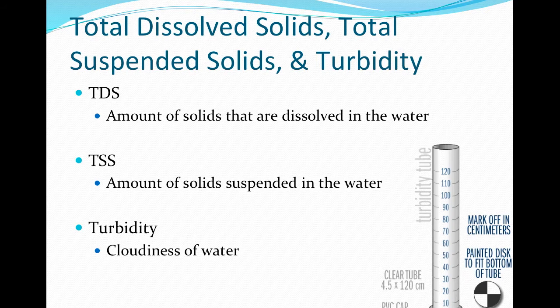Turbidity is the measure of how transparent the water is, measured at a depth in centimeters or meters. The clearer the stream or lake is, typically the more healthy it is. Turbidity increases due to suspended solids such as soil that wash into the water body. Deforestation, construction, and agriculture can cause increases in turbidity. Another source of increased turbidity or decreased transparency is algal growth. Algal blooms caused by nutrient enrichment negatively impact water transparency.